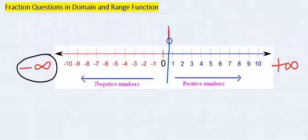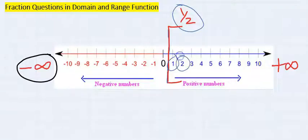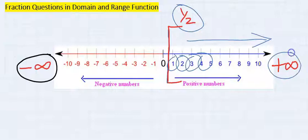Hence, the maximum value of domain we can accept is 1 over 2. After 1 over 2, we can accept 1, 2, 3, 4, and every other number going towards positive infinity for domain.